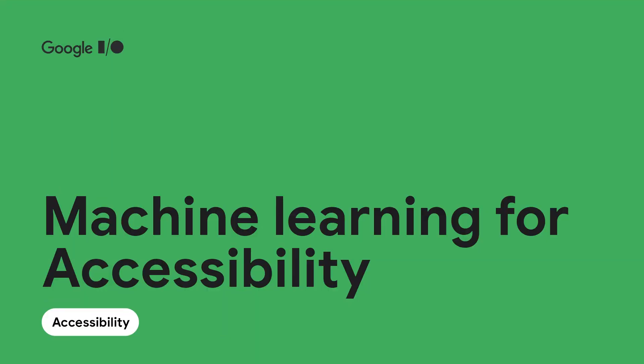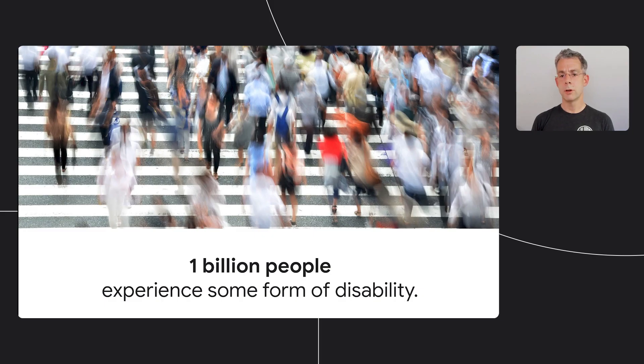Hi, everyone. My name is Tom Hume. I'm a product manager in Google Research. I'm here today with my colleagues Scott and Sagar to talk about the intersection of machine learning and accessibility. Around the world, 1 billion people currently experience some form of disability, which means that people with disabilities are using your app right now, and in larger numbers than you might expect.